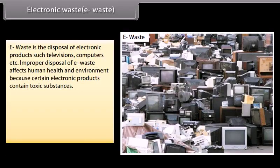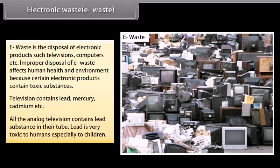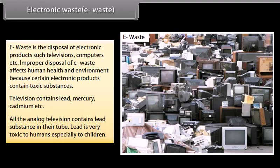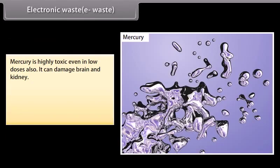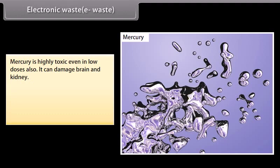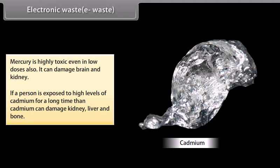E-waste is the disposal of electronic products such as televisions and computers. Improper disposal of e-waste affects human health and the environment because certain electronic products contain toxic substances. Televisions contain lead, mercury, and cadmium. Lead is very toxic to humans, especially children. Mercury is highly toxic even in low doses and can damage the brain and kidneys. Exposure to high levels of cadmium over a long time can damage the kidney, liver, and bone.